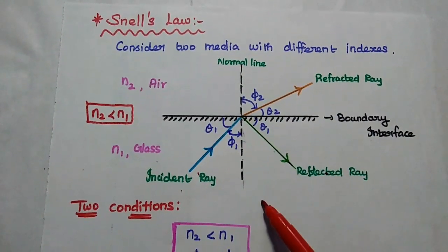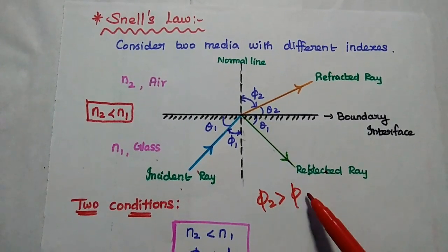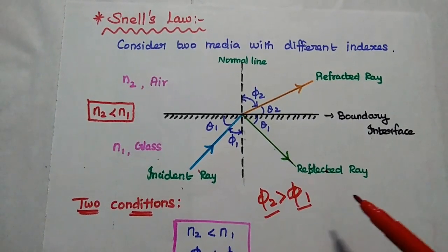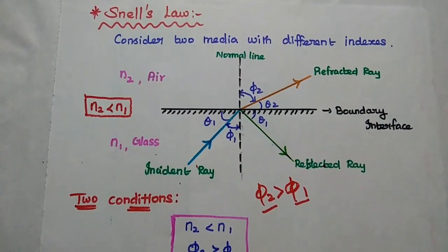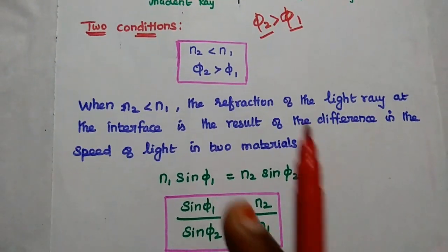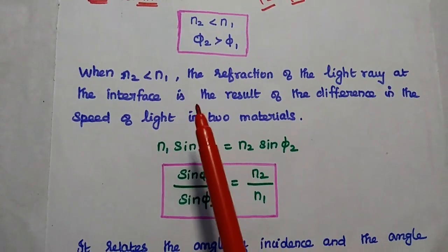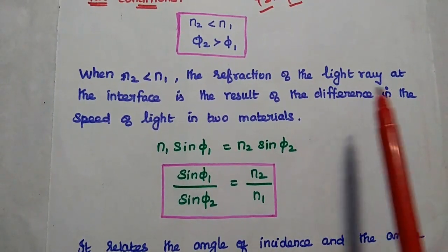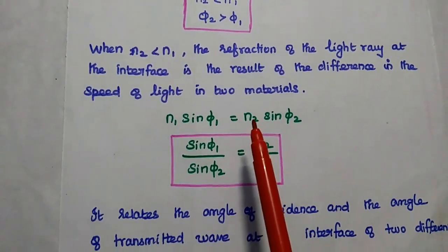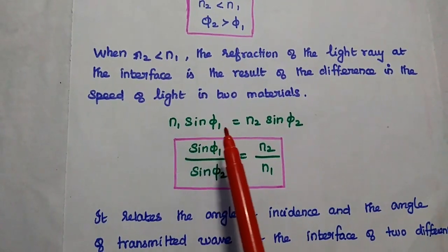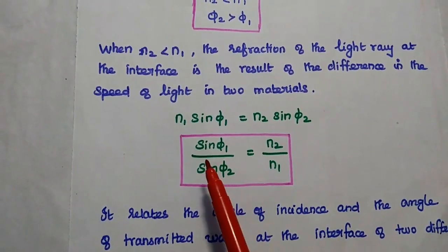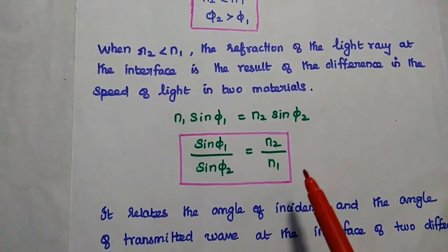From this, we come to know that phi 2 is greater than phi 1 — that is, the angle of refraction is greater than the angle of incidence. It is related using Snell's law: when n2 is less than n1, phi 2 is greater than phi 1. The refraction of the light ray at the interface is the result of the difference in the speed of light. Snell's law is represented as n1 sin phi 1 is equal to n2 sin phi 2. From this, we can get the relation: sin phi 1 by sin phi 2 is equal to n2 by n1.